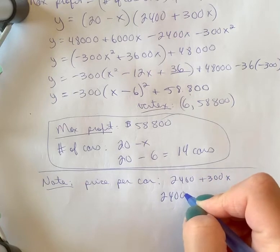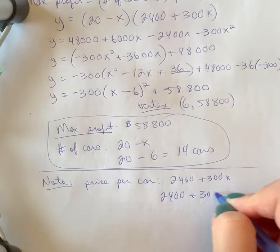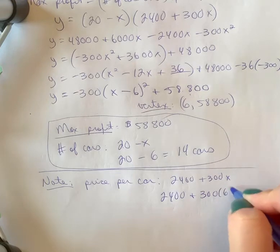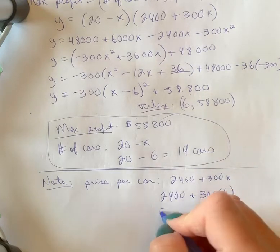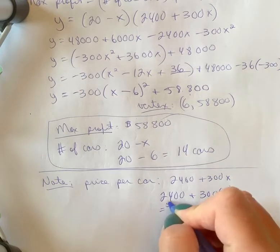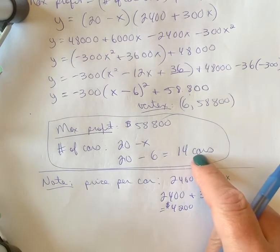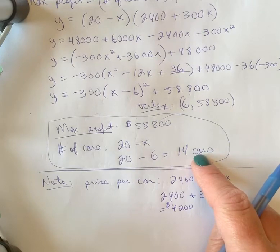So x value was 6, so this was $4,200. The only other reason I would maybe do this is to check: if I went 4,200 times 14, and you can put this in a calculator real quick if you wish,